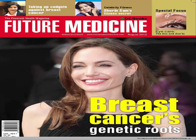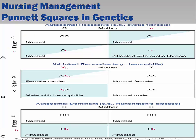Although most breast cancers are not related to the BRCA gene mutation, a patient with that mutation has a markedly increased risk for breast cancer. You can identify and assess inheritance patterns and explain them to a patient and family through the use of family pedigrees and Punnett squares. When one parent has an autosomal recessive disorder and the other parent has no autosomal recessive genes, the children will not display characteristics of the disorder but could be carriers.